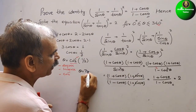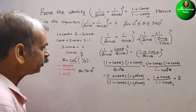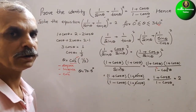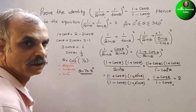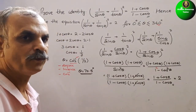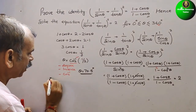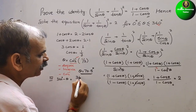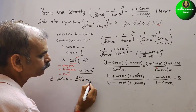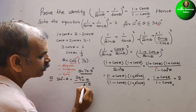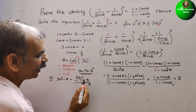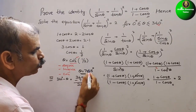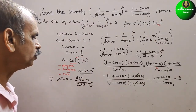Since 1/3 is positive, cos is positive in the 1st and 4th quadrants. The 1st quadrant solution is θ = 70.5°. For the 4th quadrant: θ = 360° − 70.5° = 289.5°. So the two solutions are 70.5° and 289.5°.